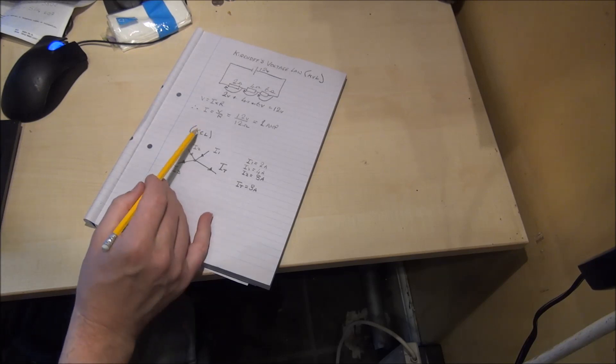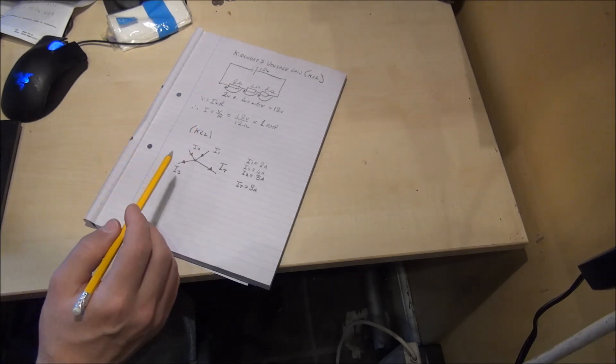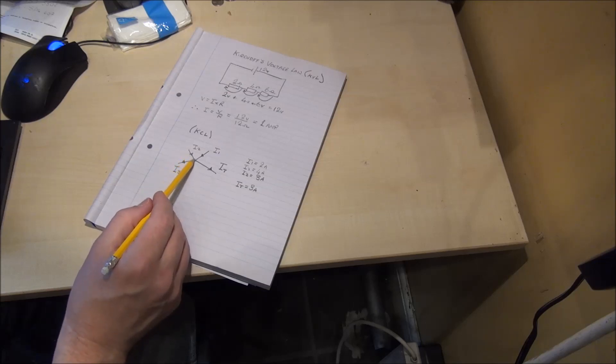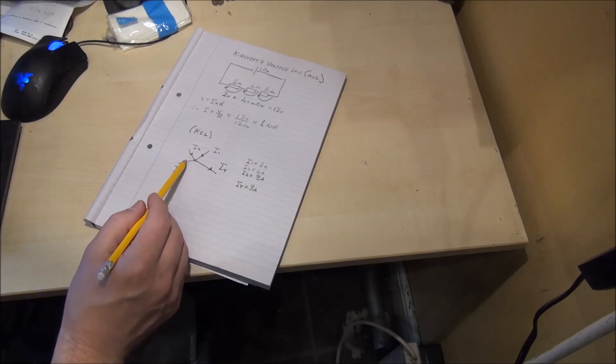Kirchhoff's current law, often abbreviated to KCL, states that the sum of currents flowing into a junction is equal to the currents flowing out of that junction.